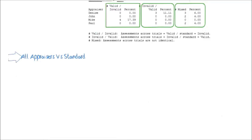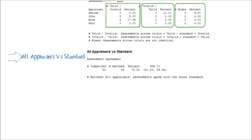In the table, we can see that the agents provided correct classification of the requests 76% of the time, with a 95% confidence interval between 62% and 87%. Now let's see how to perform this analysis in Minitab.